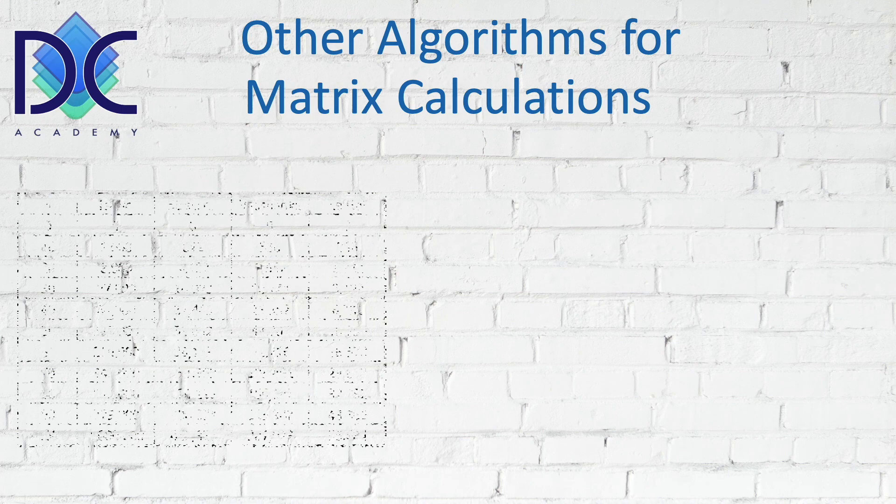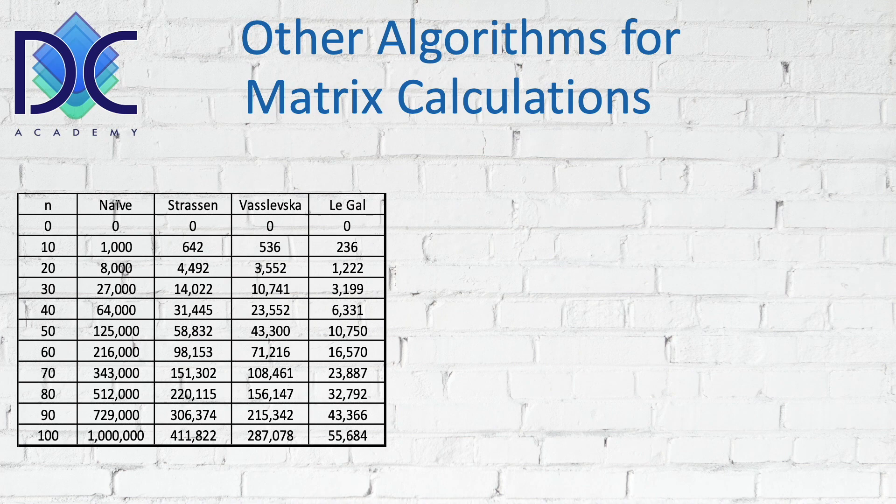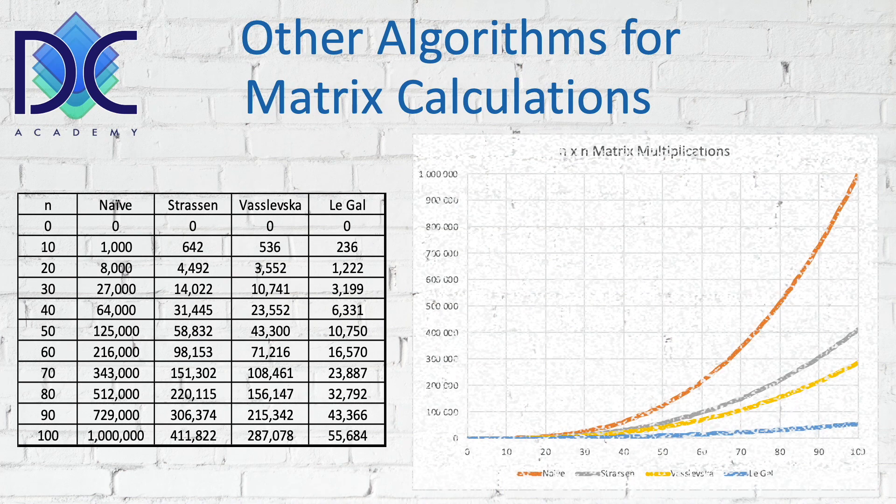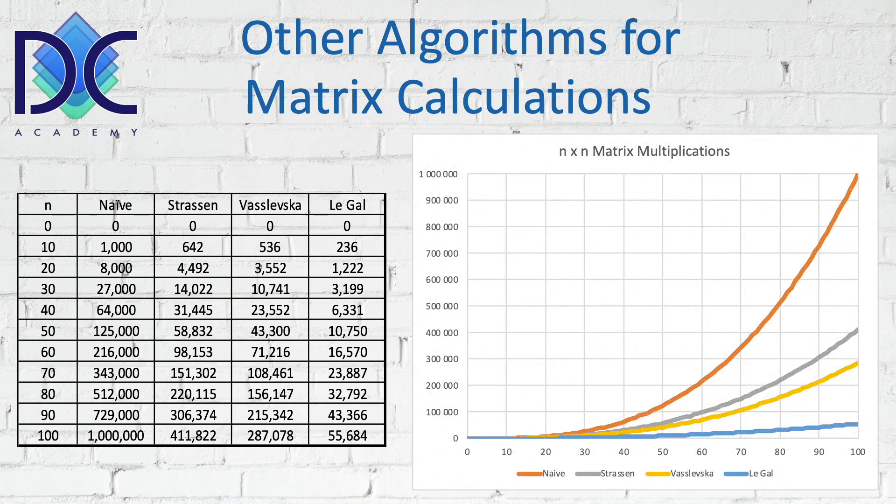And basically, over the years, a lot of different methods have been developed. We find here the overview for an n times n matrix multiplication for four different ways of calculation. We have the naive, which is the one that we did before.